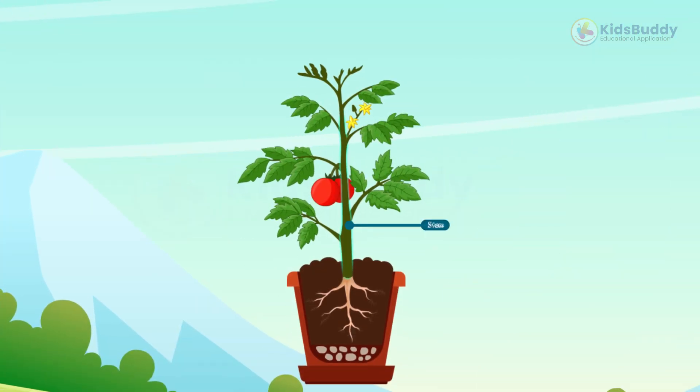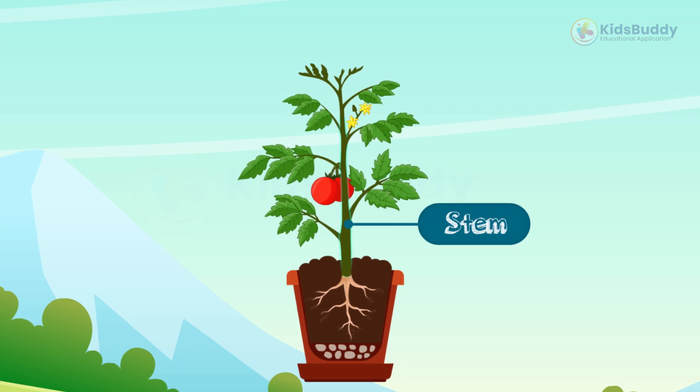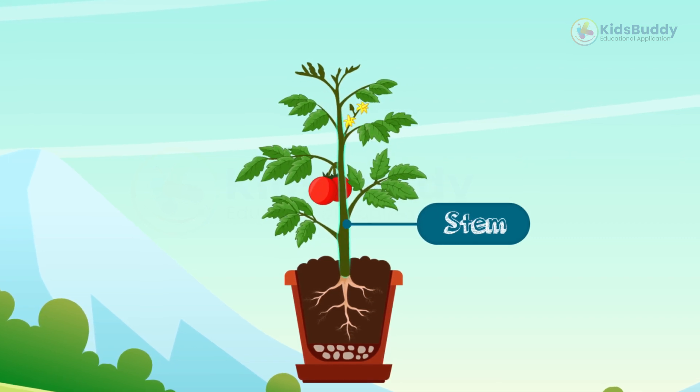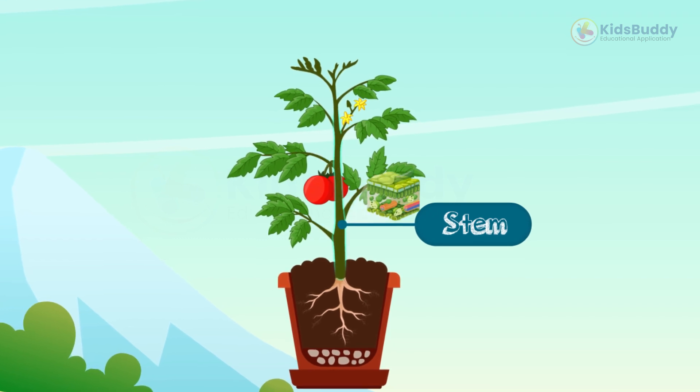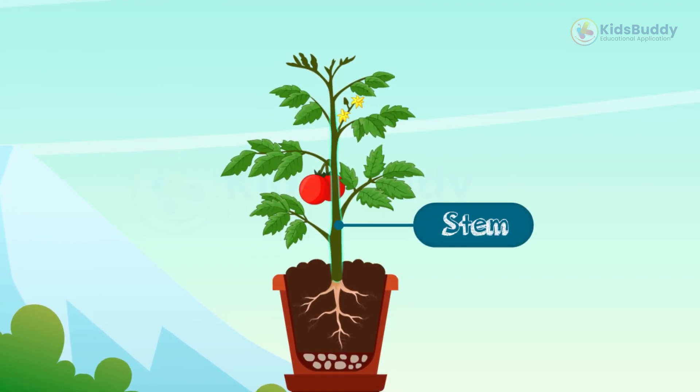The stem of a plant has many functions. It provides support to the plant, transports water and nutrients throughout the plant, stores food, and even reproduces in some cases.